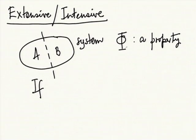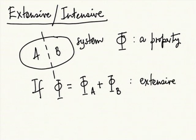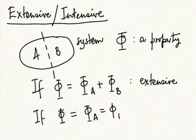If my system is whatever is inside this bottle, system A could be the water and system B could be air. Then, if we measure the same property phi for A and B, and if phi turns out to be phi_A plus phi_B, then we say that it is extensive. Whereas if it turns out that phi equals phi_A equals phi_B, then it is called intensive.